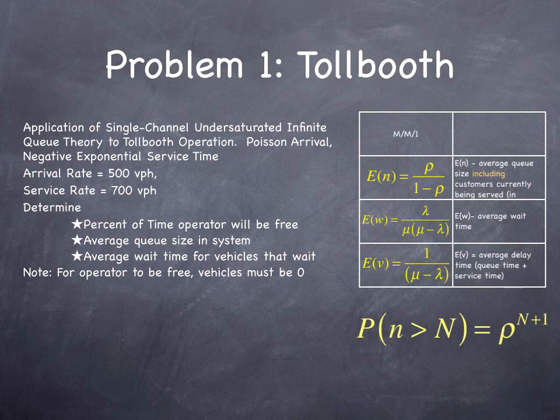We have a single channel one lane undersaturated infinite queue. We're going to assume Poisson arrivals, negative exponential service time. That means they're random arrivals and random departure rates. So it's an M/M/1 process.